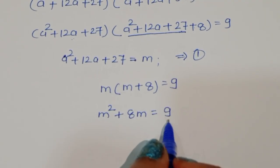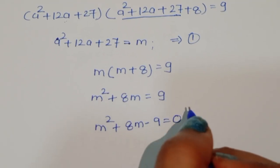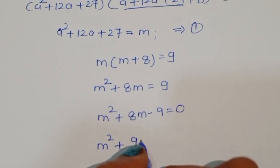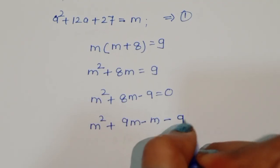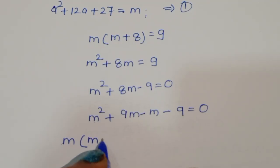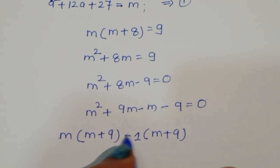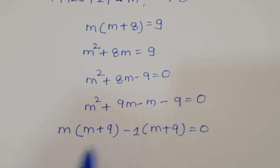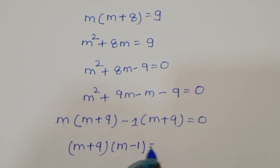From M² + 8M = 9, we write M² + 8M - 9 = 0. We split 8M as 9M - M, giving M² + 9M - M - 9 = 0. Taking M common: M(M + 9) minus 1(M + 9) = 0, so (M + 9)(M - 1) = 0.